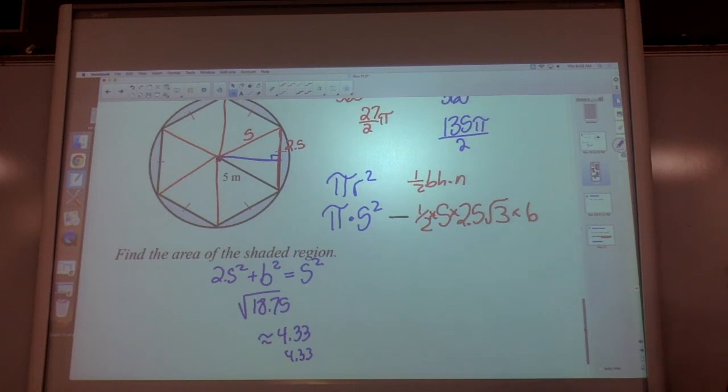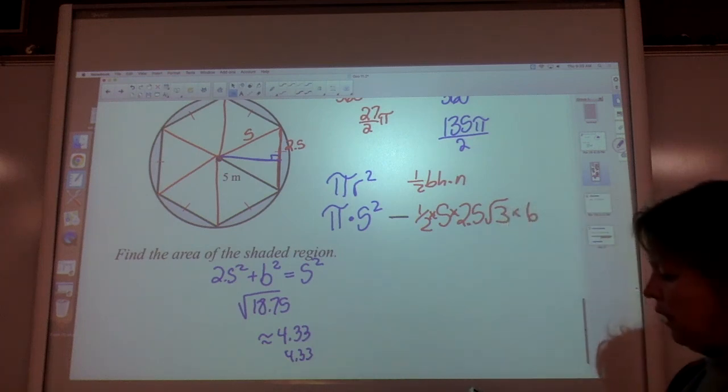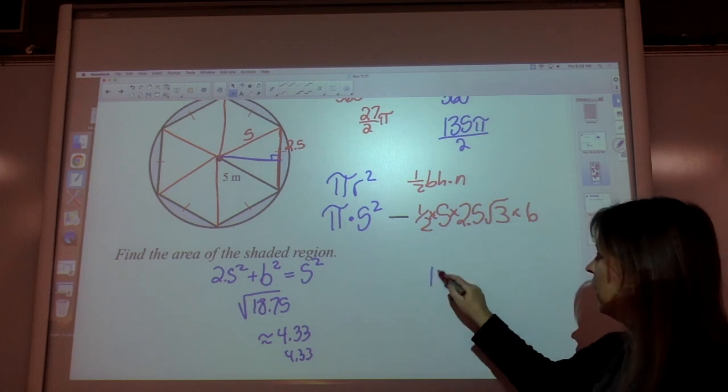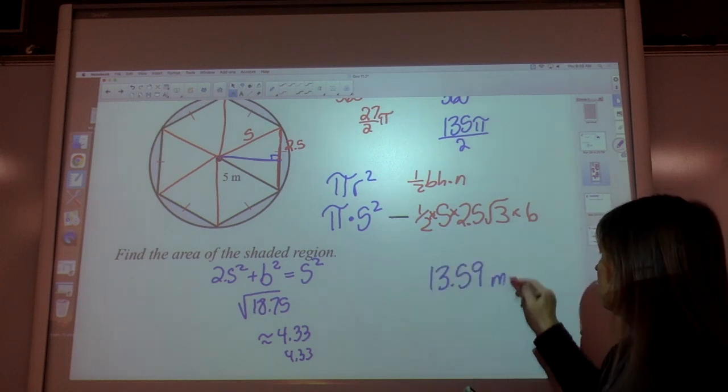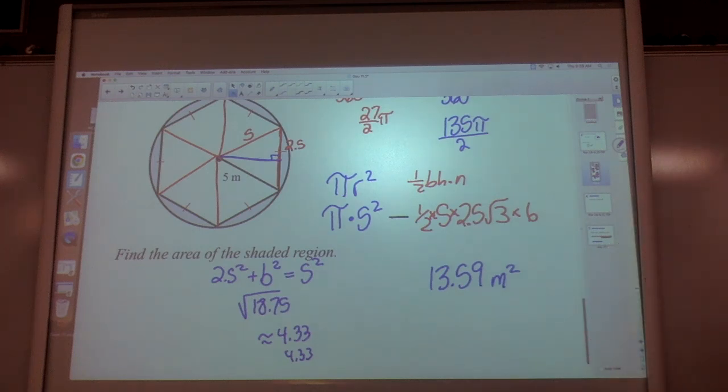Well, now we've got to type this whole thing in. In one clear shot, we're going with π times 5² minus, and again, you guys try it on your calculator also. Don't just write down what I have. You have to know how to type it in. That's half the battle. Minus 0.5 times 5 times 2.5 times square root of 3, times 6. You should get 13.59 square meters is how much area we have left after we took our circle and minused our hexagon.